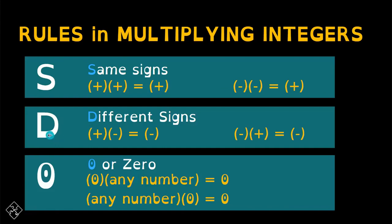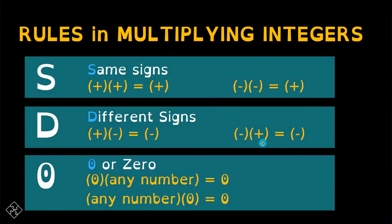The second rule: D stands for different sign. When you multiply two numbers with different signs, the product is negative. So a positive integer multiplied by a negative integer gives a negative integer. Similarly, a negative integer times a positive integer also gives a negative answer. So different sign when multiplied always gives a negative result.